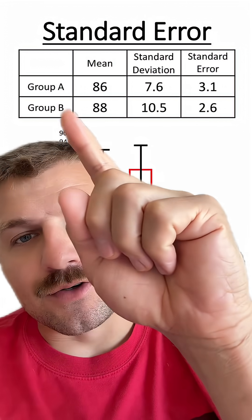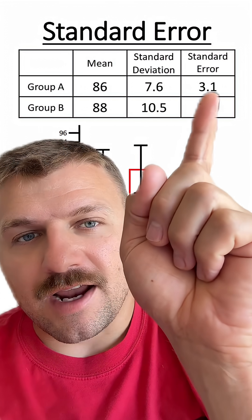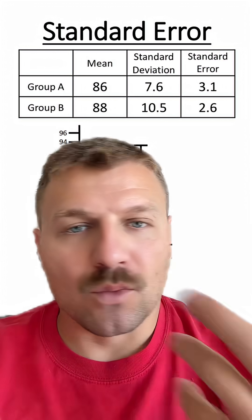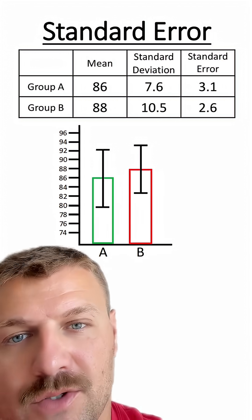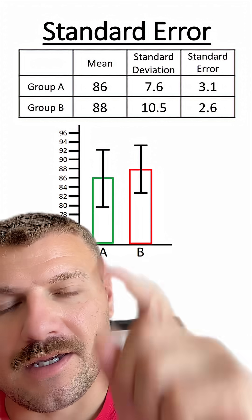So for Group A and Group B, we have a mean of 86 and 88, and we have a standard error of 3.1 and 2.6. What do we do with this information? You can see here I have a bar graph with the averages of A and B graphed out.